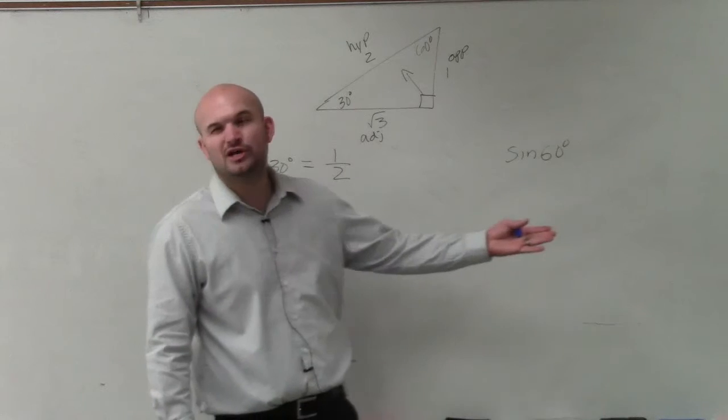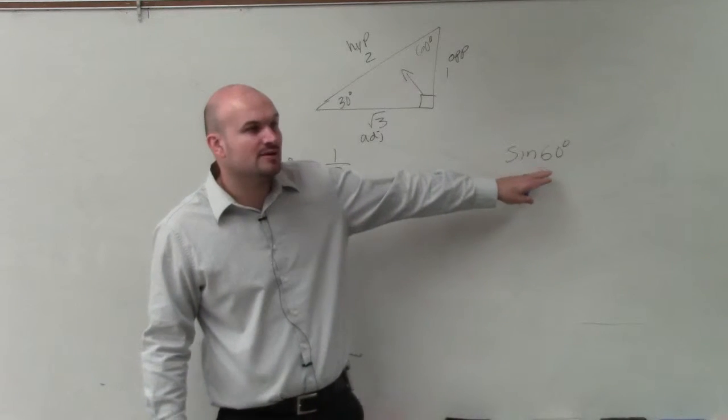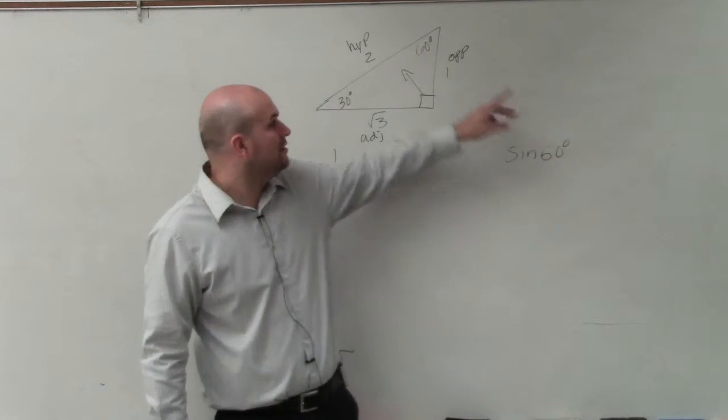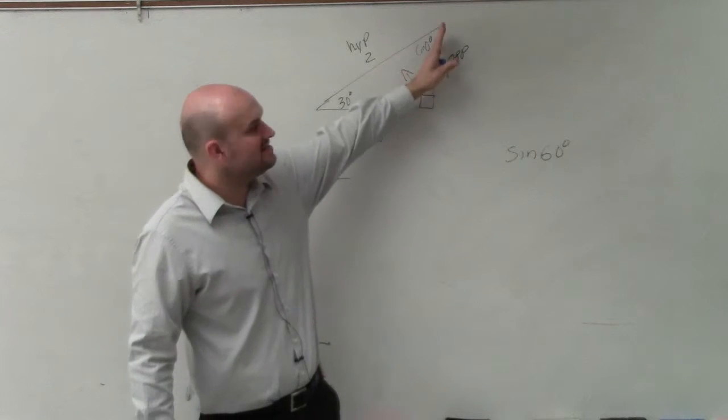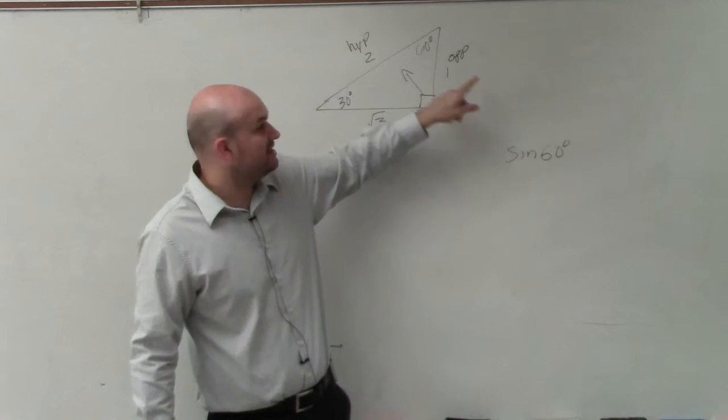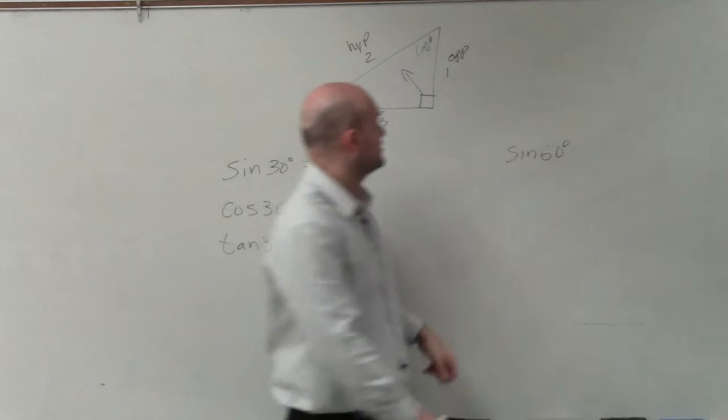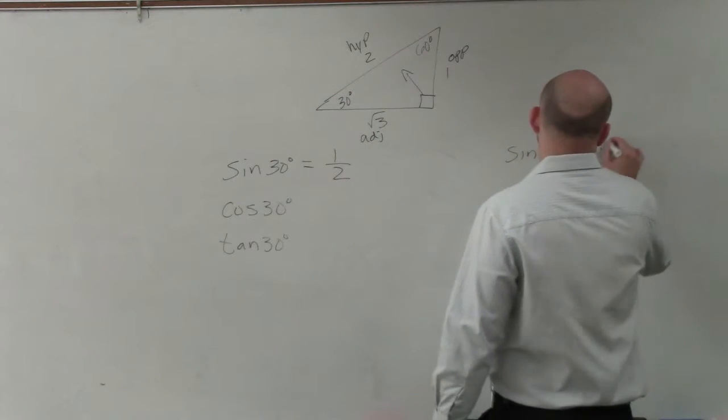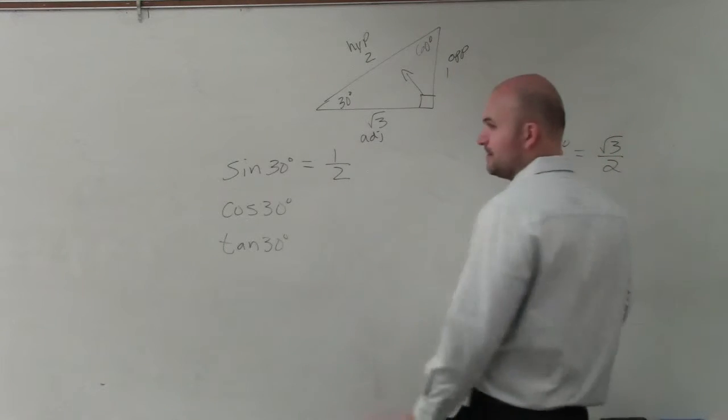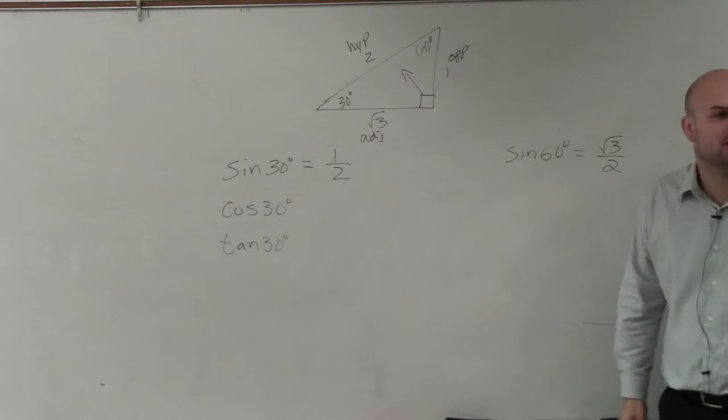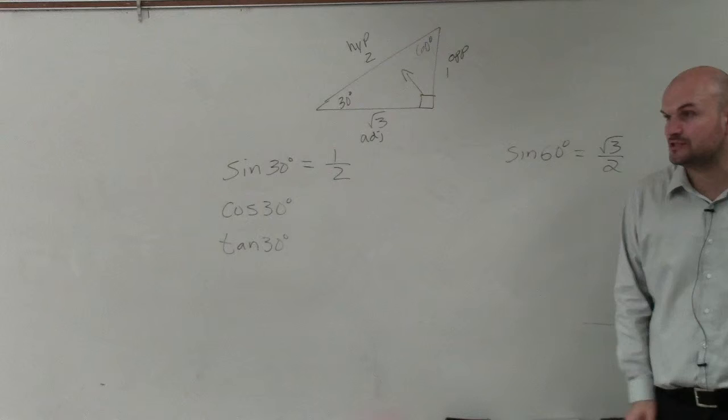However, just a note, I'm going to erase this. What if I said, what is the sine of 60 degrees? Well, 60 degrees, this side is the adjacent, because the adjacent is always between your angle and 90 degrees. So the sine of 60 degrees would be the square root of 3 over 2. Does everybody see why? If you don't, raise your hand now and ask questions.